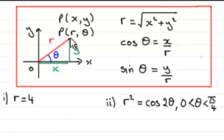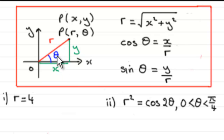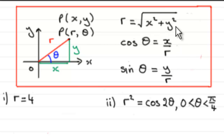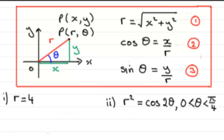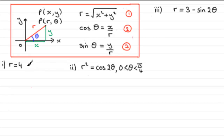r is equal to the square root of x squared plus y squared — that's essentially Pythagoras's theorem. By trigonometry, cos theta equals x over r, and sine theta equals y over r. Using these equations, which are numbered one, two, and three, we can take our polar equations and convert them to Cartesian form.